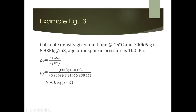Example: calculate the density of methane at 15°C and 700 kPa, with atmospheric pressure of 100 kPa. The pressure at flowing conditions is the sum of the two pressures. The compressibility factor, gas constant, and temperature in Kelvin — remember to convert Celsius to Kelvin — are all plugged into the formula to get the density at those conditions.